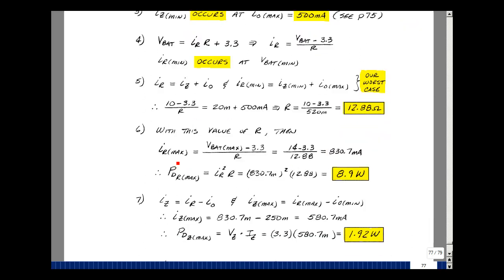When is the current in the resistor maximum? We're looking at actually the minimum value here. Well, the maximum current would be when the battery is at its maximum value, which is 14 volts. Subtracting the Zener voltage divided by our resistor of 12.88, we get 830.7 milliamps.